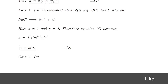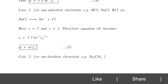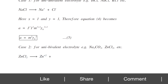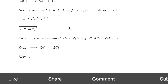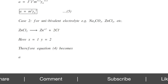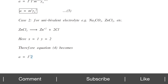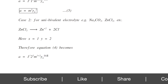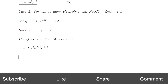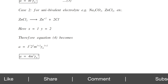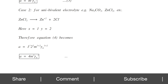Case 2: uni-bivalent electrolytes — examples are sodium carbonate and zinc chloride. ZnCl₂ produces 1 Zn²⁺ ion and 2 Cl⁻ ions, so X equals 1 and Y equals 2. Equation 4 becomes A equals 1^1 × 2^2 × M^(1+2) × Gamma±^(1+2), which gives A equals 4·M³·Gamma±³. This is equation number 6.